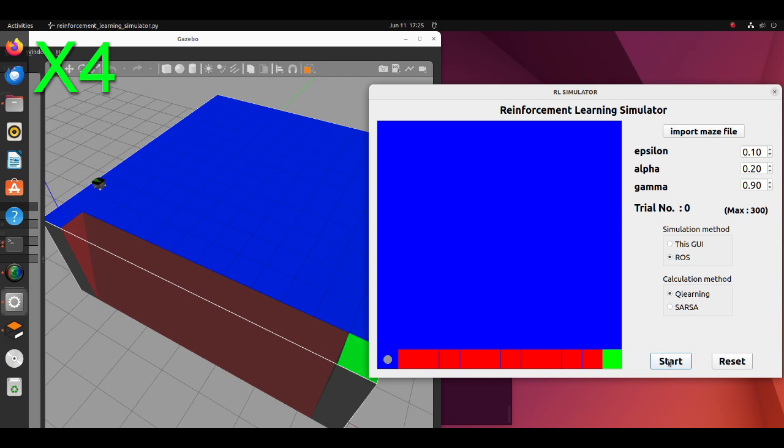The robot will begin to move. Note that ROS and GUI are working in the same thread, so we cannot operate GUI during gazebo simulation.